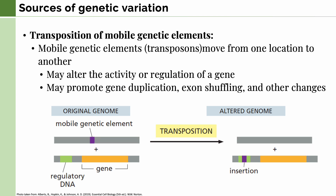The next source of variation is the transposition or movement of specific DNA sequences called mobile genetic elements. In eukaryotes, the most common ones are called transposons, and these move from one location in the genome to another. As a result, this can alter the activity or regulation of a gene, or promote other sources of genetic variation like gene duplication, exon shuffling, and other changes. In this example, we can see a mobile genetic element in the original genome transferring into a regulatory DNA, and in the altered genome, this insertion may cause an alteration in the regulation of the gene.